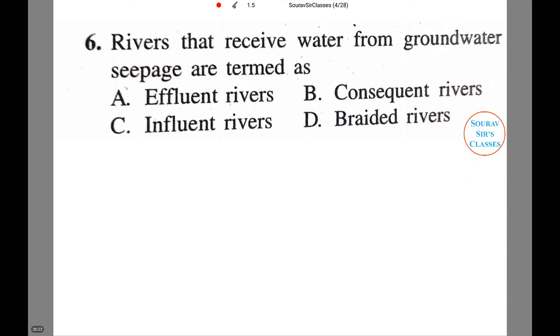Now today we will be dealing with this question, which is marked as C. Let me make the correction—it is six. The question reads: Rivers that receive water from groundwater seepage are termed as. This is a very easy question. However, there are different rivers mentioned here, and we will try to figure out the features of each of these rivers individually.